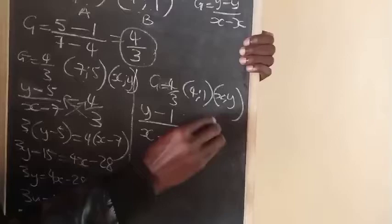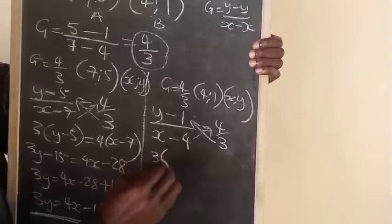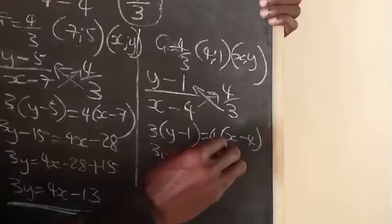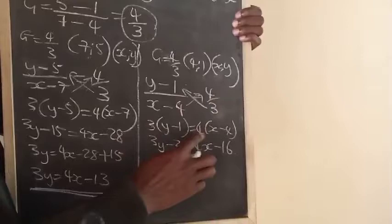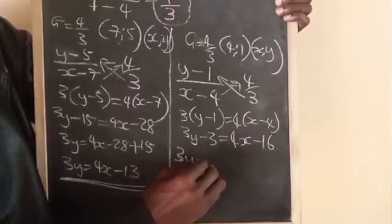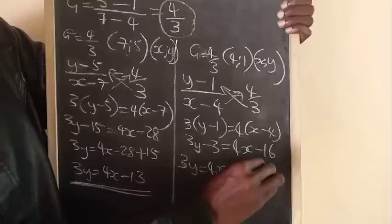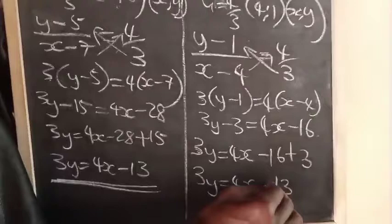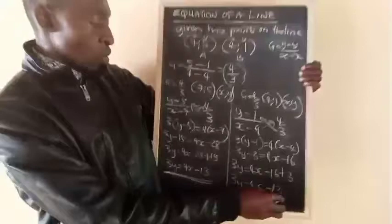we get y minus 1 over x minus 4 is equal to 4 over 3. We cross multiply. We get 3y minus 1 equals 4x minus 4. 3 times y is 3y minus 3, which is 4x minus 16. 4 times minus 4 is minus 16. Then,